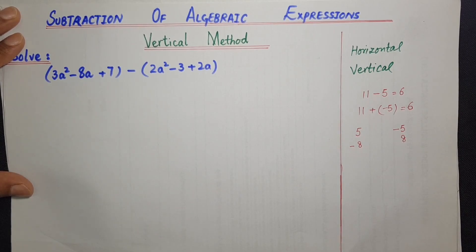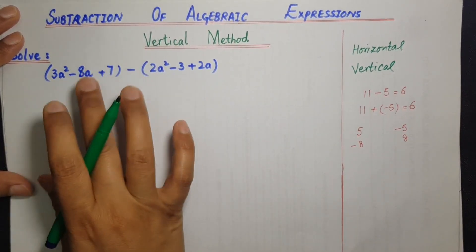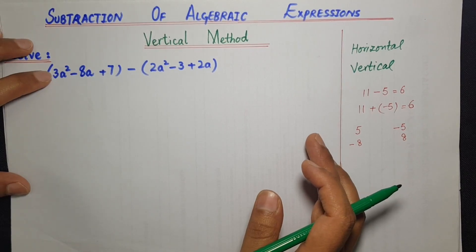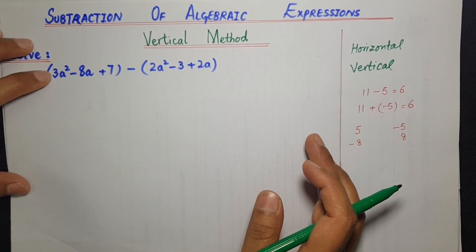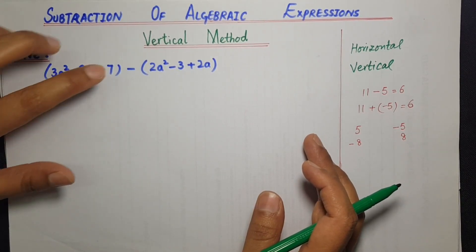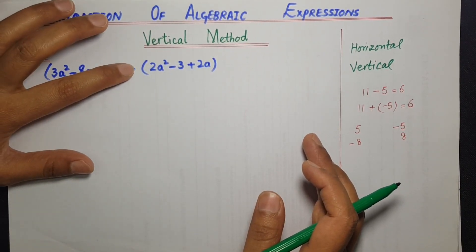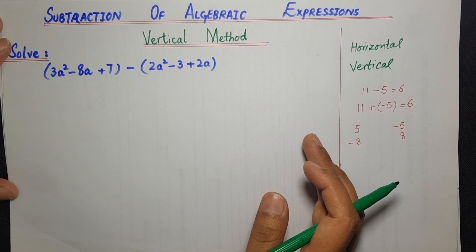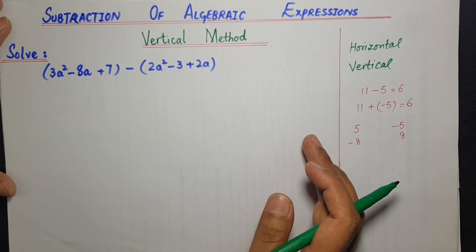Don't worry، اس کو پریشان نہیں ہونا۔ ہم اس کو example کے through دیکھتے ہیں۔ یہ example لکھی ہے: 3a² minus 8a plus 7 — اس کو ہم نے minus کرنا ہے 2a² minus 3 plus 2a۔